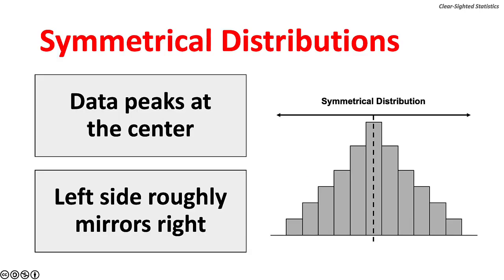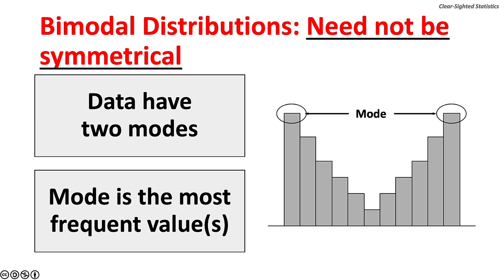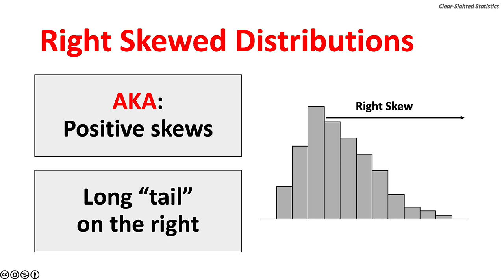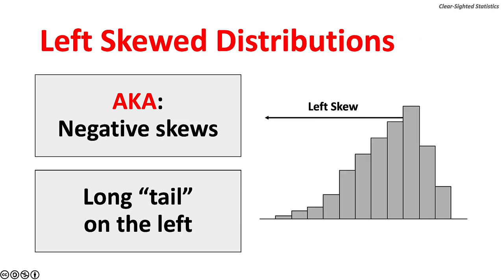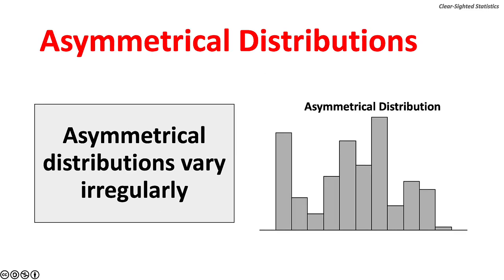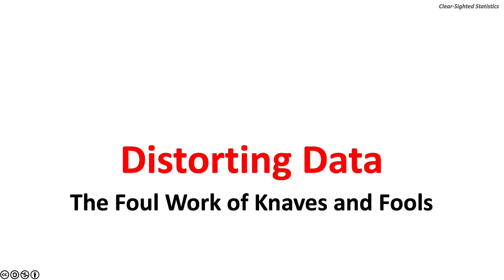Let's turn to the shape of distributions. Data in a symmetrical distribution peaks at the center, and the left side roughly mirrors the right side. A bimodal distribution is also symmetrical but has two modes — the most frequently occurring value or values. Right-skewed distributions have long right tails and are often called positive skews. Left-skewed distributions have a long tail on the left side and are often called negative skews. Asymmetrical distributions vary irregularly.